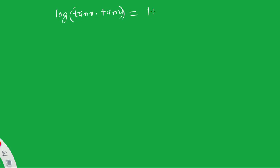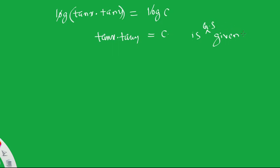So we get log|tanx| + log|tany| = log c. Using log a + log b = log(ab), this becomes log(tanx · tany) = log c. Removing log from both sides: tanx · tany = c. This is the general solution of the given equation.